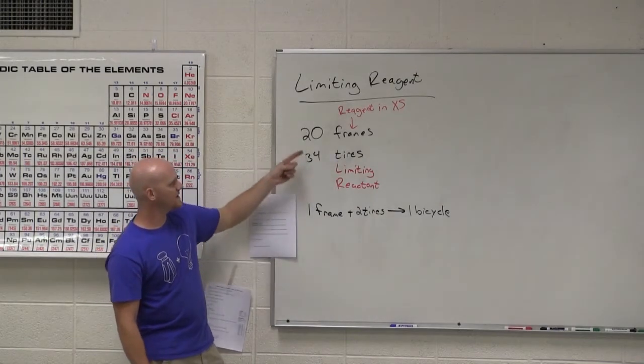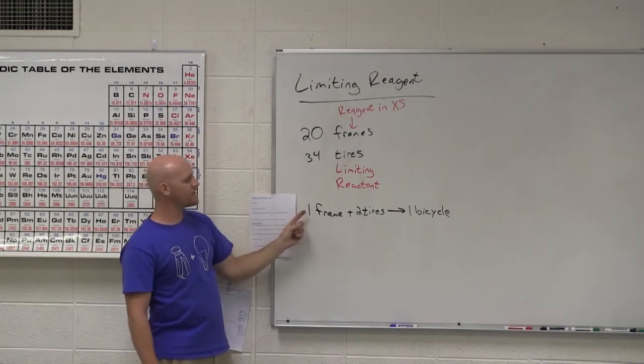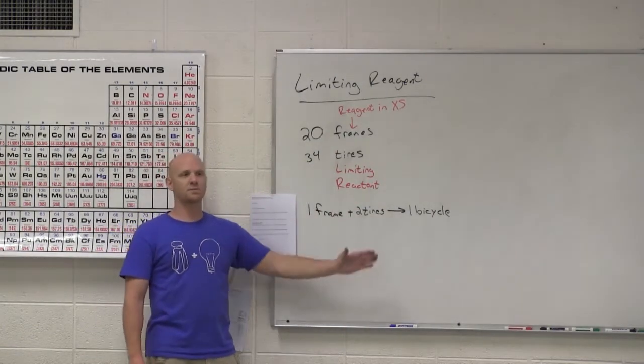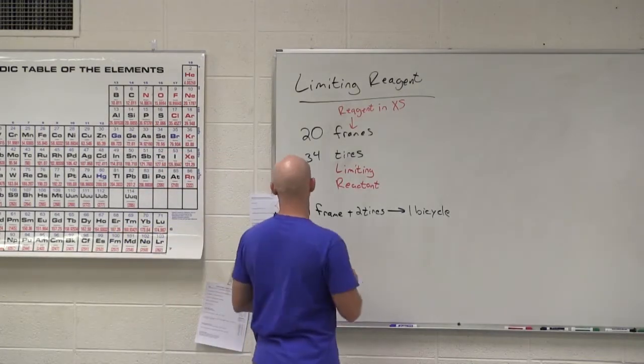And that number of times you actually do it will lead to calculating your theoretical yield, we'll call it. So in this case, all I did was take each of these numbers of my reactants here and I divided them by their corresponding coefficients in the balanced reaction. Whichever number comes out lower, that's your limiting reagent. Let's apply this to something a little more abstract.